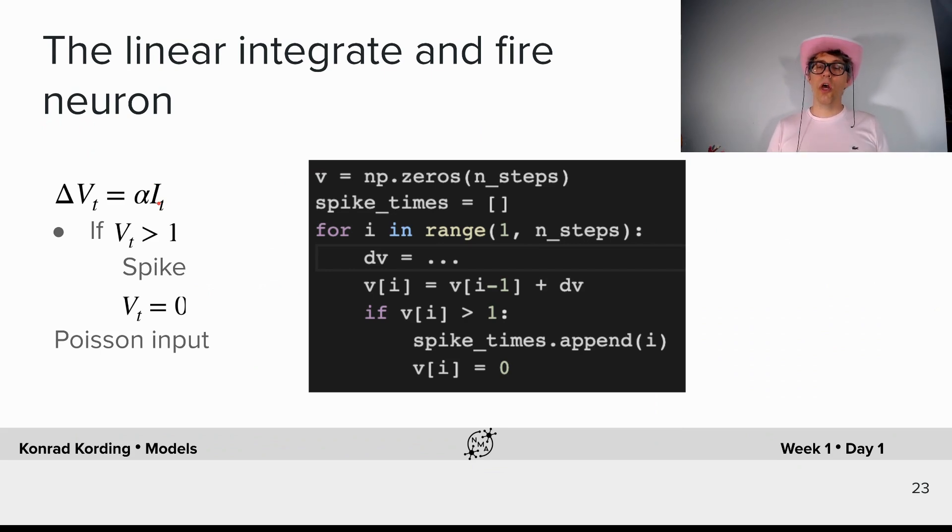Now that input current would come from other neurons that have exponential inter-spike interval distribution. This describes how the voltage changes over time. If that voltage exceeds one, then we will have a spike, and we will at the same time reset the voltage to zero in that case.